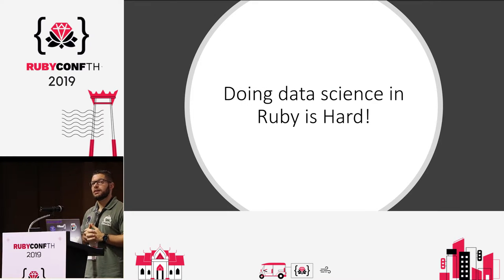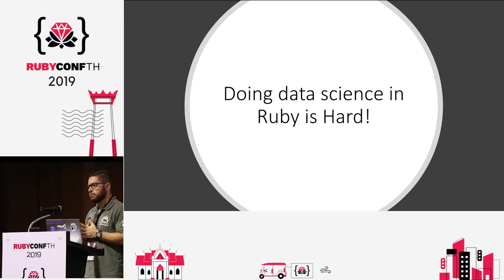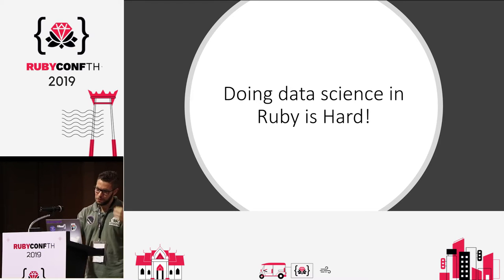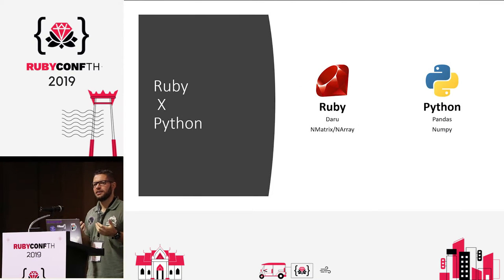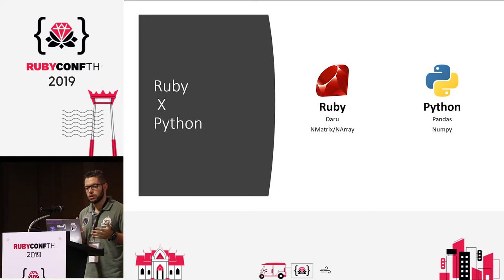Doing data science in Ruby is hard. We have the tools — some work really well, others not so well — and we lack documentation because there aren't many users or developers. Everyone agrees that the current crown jewel of data science is Python, and we have mostly the same functionality in Ruby too.